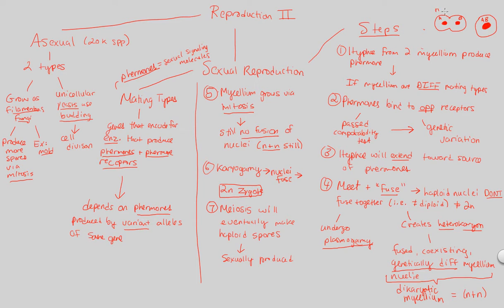Right now we are in an N plus N state — haploid A and haploid B. After karyogamy this becomes a 2N state. Once we have that, it will undergo meiosis. Once this undergoes meiosis, it will produce a haploid spore — a totally new haploid spore that is then sent off to a new fungus to do this whole process over again.